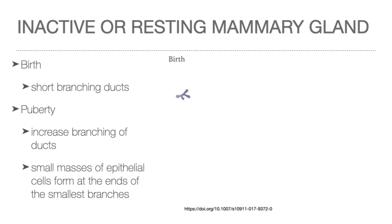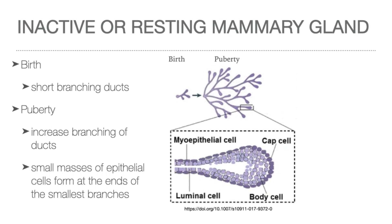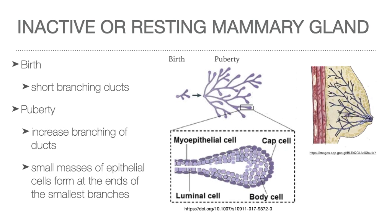The resting mammary gland is the mammary gland from birth until before pregnancy. At birth, the mammary gland is devoid of acini, consisting only of short branching ducts. As puberty approaches, rising levels of ovarian hormones stimulate growth and branching of the mammary gland, and small masses of epithelial cells are formed at the ends of the smallest branches. In the adult, cyclic changes in glandular tissue are minimal, and the slight increase in breast size and sense of fullness experienced by some women at mid-cycle is due to increased blood flow and edema of the connective tissue.